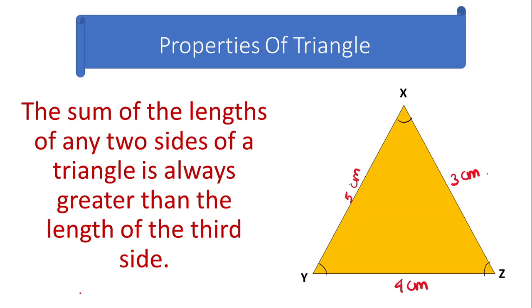The next property is related to its length. If you add any two sides of a triangle, the addition should be greater than the third side. For example, 5 cm plus 3 cm equals 8 cm, which is greater than 4. And 3 plus 4 is 7, which is bigger than 5. And 5 plus 4 is 9, which is greater than 3. These are the two most important conditions when studying the properties of the triangle.